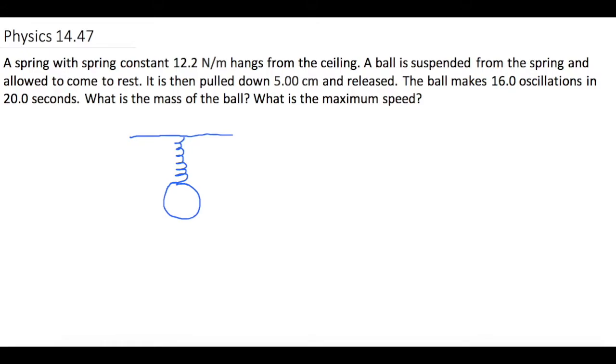They let the ball come to rest and then they pull it down 5 centimeters, which is 0.05 meters. Then they tell us that it makes 16 oscillations in 20 seconds and they want us to find the mass of the ball and what is Vmax. So first off let's just make a list of everything that we know. We know that K is equal to 12.2 newtons per meter, and they tell us that it's pulled down 5 centimeters, so we're going to assume that that is our amplitude, which is 0.05 meters or the 5 centimeters.